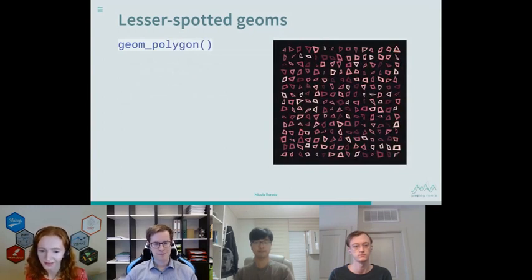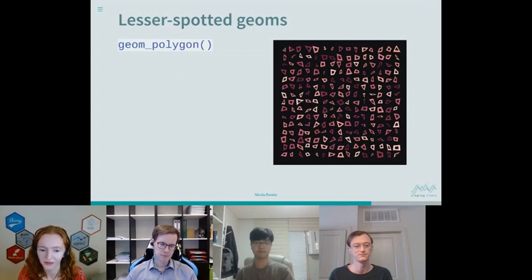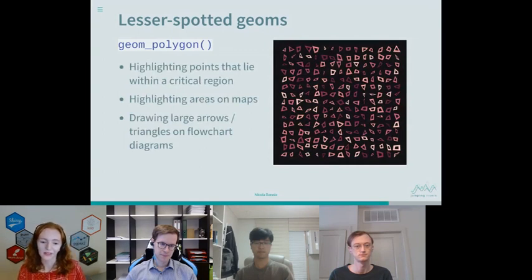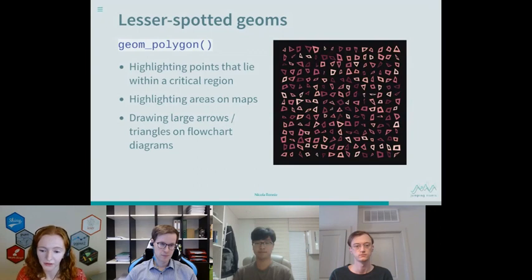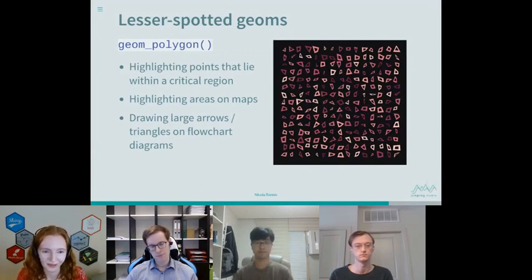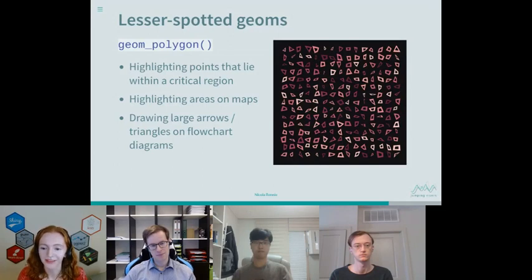Next up is geom_polygon. It's very similar to geom_path, except the endpoints are connected and you can control the inner color using the fill argument. I've used this in data science work — it's very useful for mapping or working with spatial data and overlaying irregular polygons on maps, such as the outline of a building on top of a map. It's also useful for highlighting a critical region on a scatter plot, or for adding triangles into flow chart diagrams.